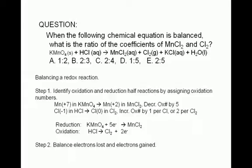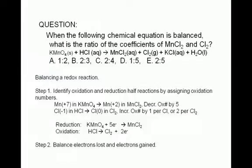Choice A says that the product ratio is 1 to 2. If 1 manganese 2 chloride is formed, that means a gain of 5 electrons. If 2 chlorine molecules are also formed, that means a loss of 4 electrons — 2 electrons for each Cl2 molecule times 2 Cl2 molecules. 5 electrons gained and 4 electrons lost: choice A can't be right, because electrons lost is not equal to electrons gained.